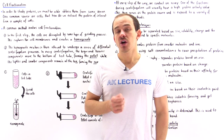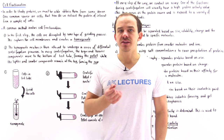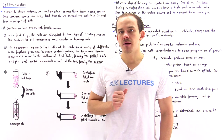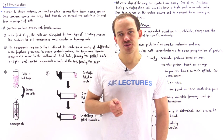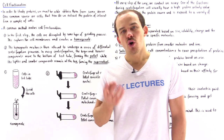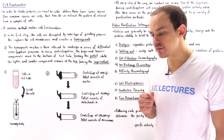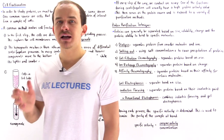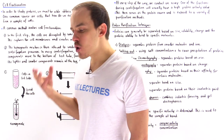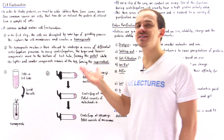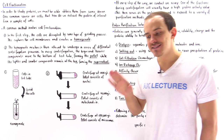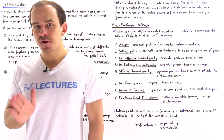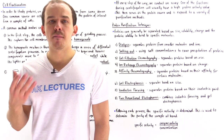In order to study proteins, we have to obtain the proteins from some type of source. One of the most common types of sources are cells. Once we obtain our sample of cells, the question is how do we extract that protein of interest from inside the cells? We expose the cells to a process known as cell fractionation. In cell fractionation, there are two important steps. In the first step, we have to form a homogenate.